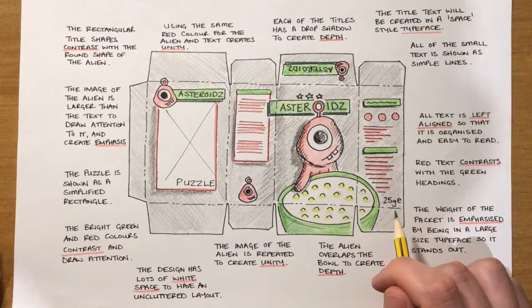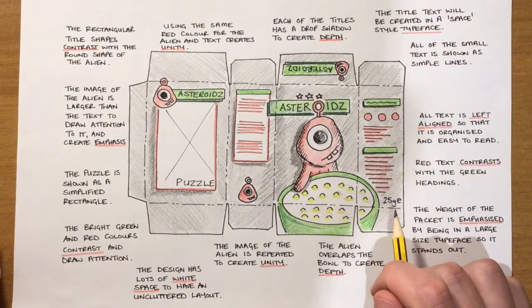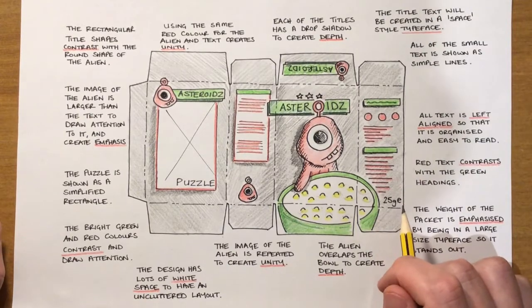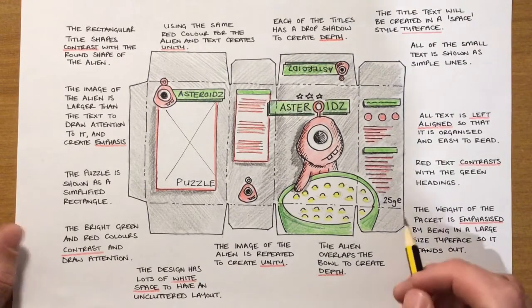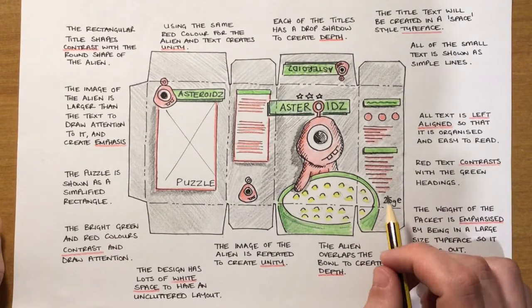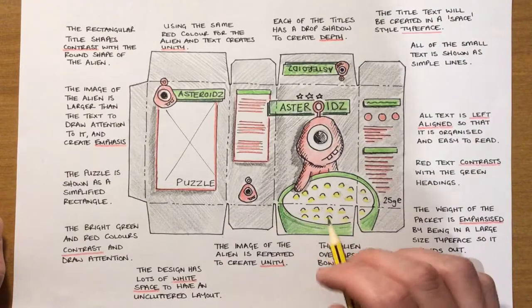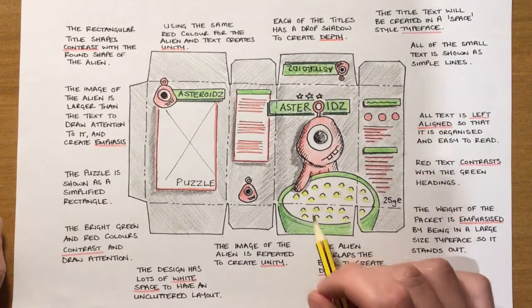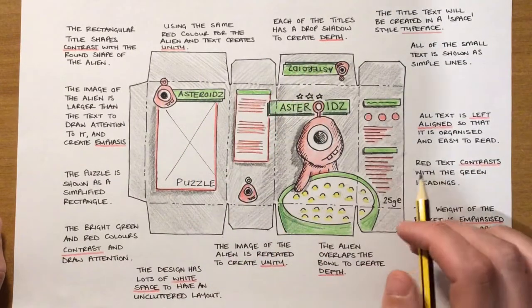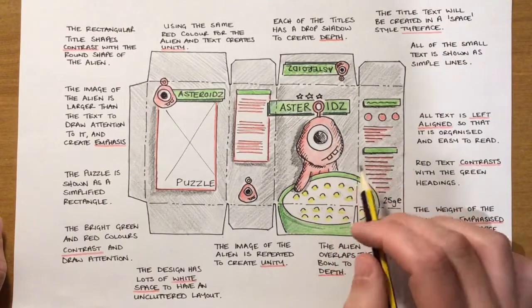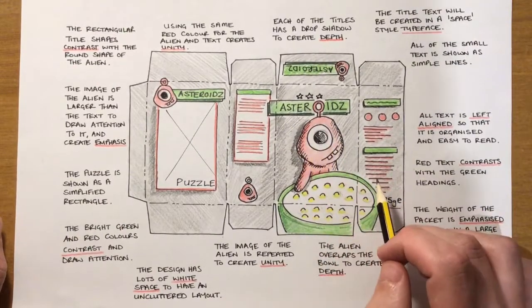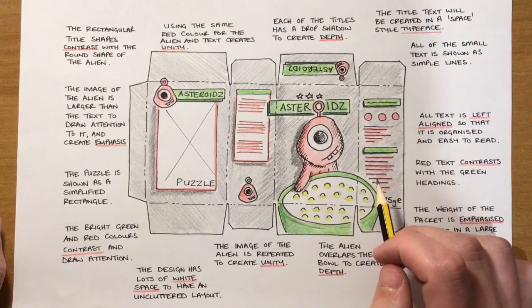Hi everyone, in this video we're going to look at annotation of a thumbnail — in this case it's the cereal packaging design that we use in S3 Graphics. In preparation for this video, I've already created my thumbnail of the little cereal packaging. I've used the template provided and added some graphics. The main little alien graphic and even the tail is one that we provide as an example — you can use that one or choose to create your own mascot character.